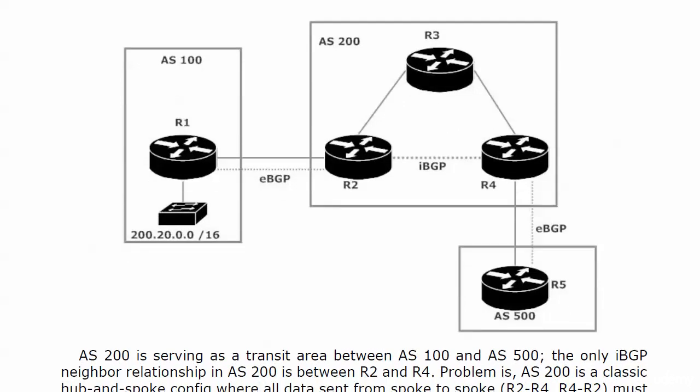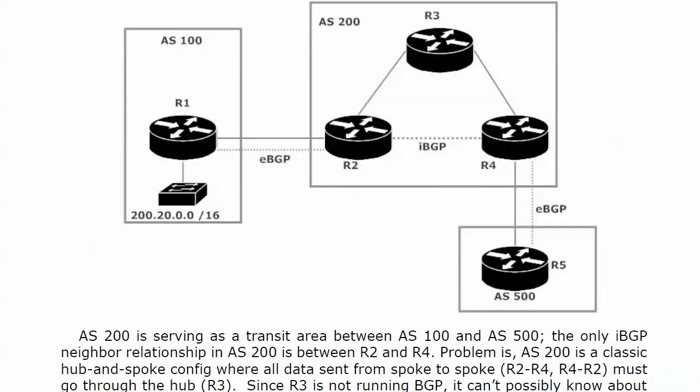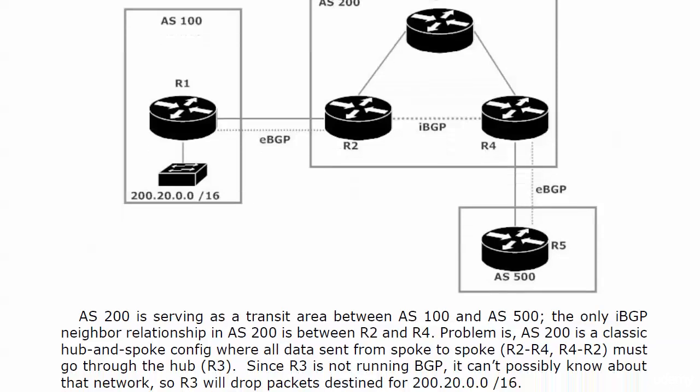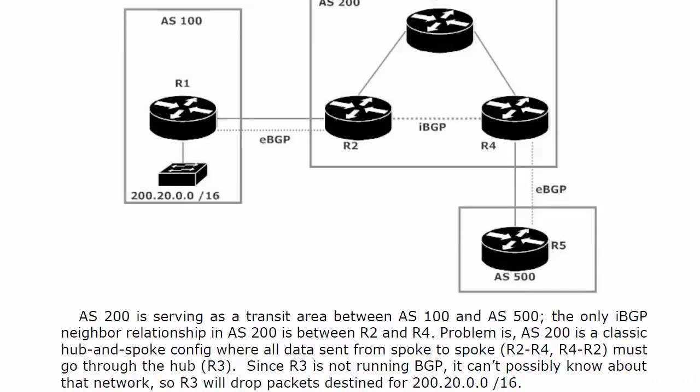The only BGP neighbor relationship in AS 200 is between routers 2 and 4. You can't assume just because you see physical connections that logical connections are fully meshed. AS 200 is a classic hub-and-spoke config where all data is sent from spoke to spoke — whether two to four or four to two — because there's no physical connection between 2 and 4. It has to go through the hub. But if router 3 is not running BGP, it cannot possibly know about the 220.0.0.0/16 networks we're trying to propagate via BGP, so router 3 would just drop those packets.